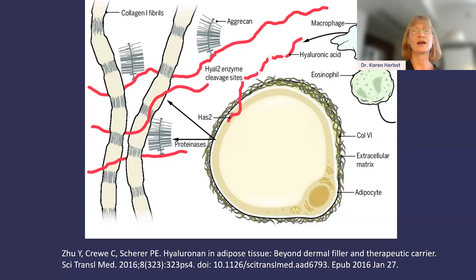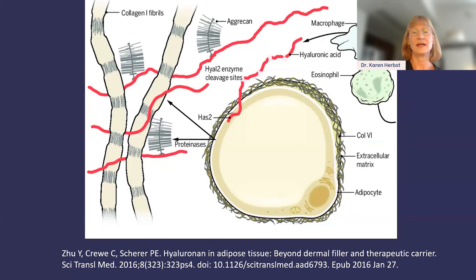To set the stage, this is a cartoon of fat tissue. The big yellow cell is an adipocyte, and in the center is a bunch of stored triglyceride. Around the outside is the extracellular matrix, which is made up of fibers — including collagen fibrils and others. This web of extracellular matrix extends way out from the cell, though it couldn't all be shown in this cartoon.